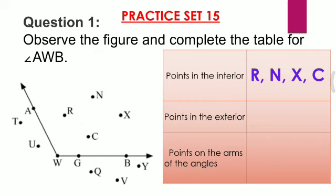Now the exterior points — exterior means outside the angle. The exterior points are point T, point U, point Q, point V, and point Y. The points on the arms of the angle are point A, point W, point G, and point B. Now you understand how to find points in the interior, exterior, and on the arms of an angle.